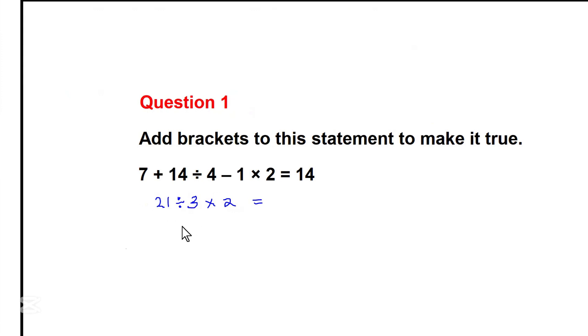21 divided by 3 equals 7. 7 times 2 is equal to 14. This means that if the first two numbers are added first, and the next two numbers, we subtract the next two numbers.